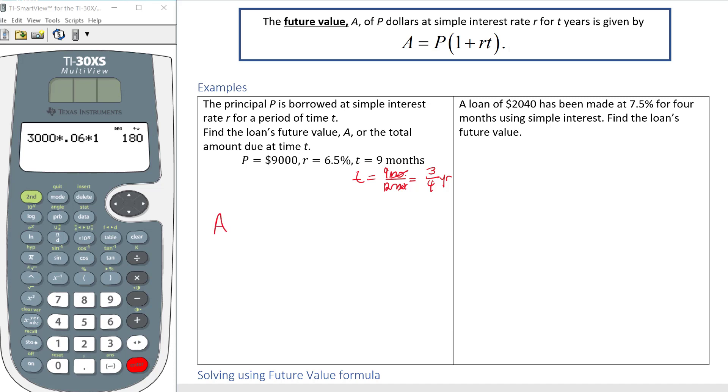So we're going to use T as 3 fourths. When I plug in my values I have A equals P for principal or present value, which is going to be the $9,000 borrowed at simple interest, times parenthesis 1 plus my rate which in this case is 0.065 times the time which in this case is 3 fourths, because nine months is 3 fourths of a year.